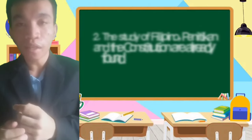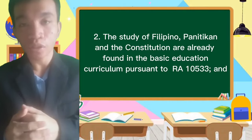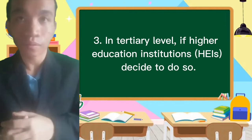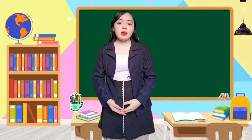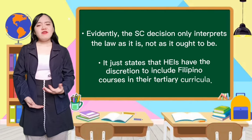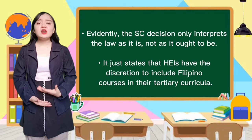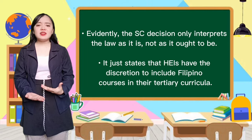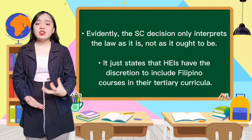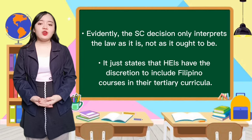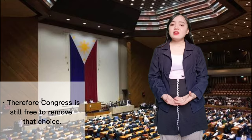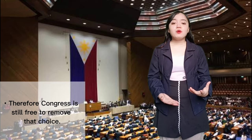Number two, Panitikan, Filipino, and the Constitution are already in the basic education curricula. And number three, higher education institutions may include them if they decide to do so. Evidently, the Supreme Court's decision only interprets the law as it is, not as it ought to be. It states that institutions have the discretion to include Filipino courses in their tertiary curricula. Therefore, Congress is free to remove that choice.